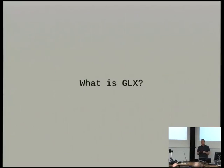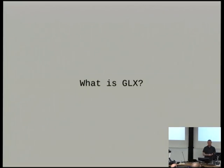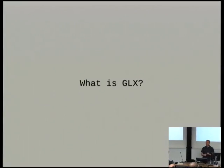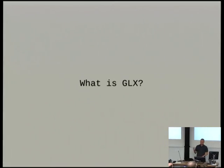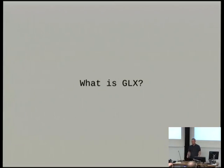That's all up to the windowing system layer. The windowing system layer is GLX on the X Windows system. It's WGL on Windows, it's AGL or CGL on Apple. There's a thing called EGL for embedded platforms where you can pretend you don't have to know what the windowing system is under you — but you really do.